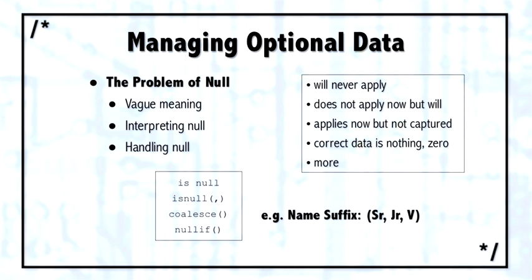So the question then is how do you handle this optional data? The typical answer is with a null. Null specifically means unknown, but to give it the definition of unknown just begs the question of why is it unknown — it could be several different reasons. It could be that it does not apply to this particular row, or that it doesn't apply now but it will later. For example, like a ship date — you may not know the ship date before it's actually shipped.